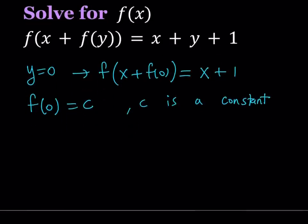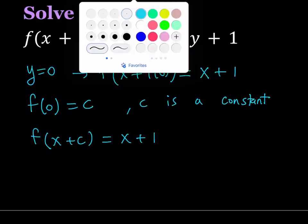How about replace f of 0 with c. And c is a constant. Alright. So now that's going to give us something nicer. We can write it as f of x plus c equals x plus 1. Now in functional equations, if you can get something like this, this will be awesome. Because from here it's very easy to get the f of x.